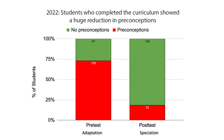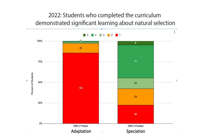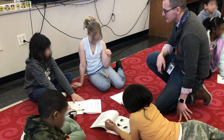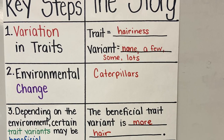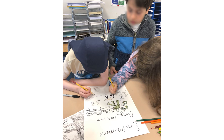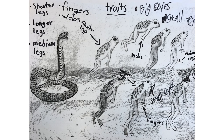Third graders can understand the mechanisms of natural selection. Third grade teachers tell us that they appreciate the teacher guide and materials that support classroom enactment and student engagement. And their students' understanding can then lay the groundwork for learning evolution in middle and high school.